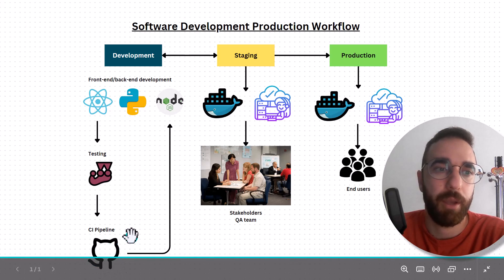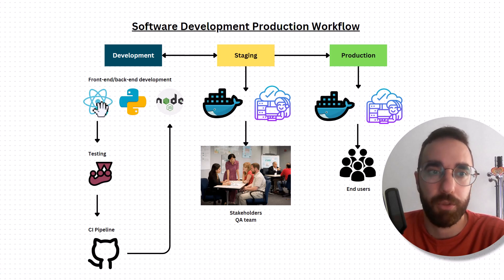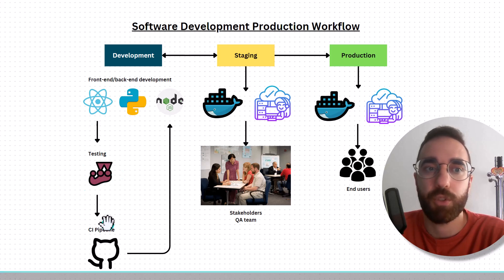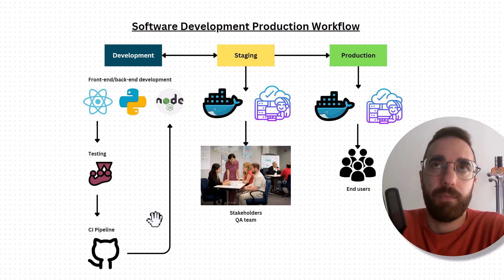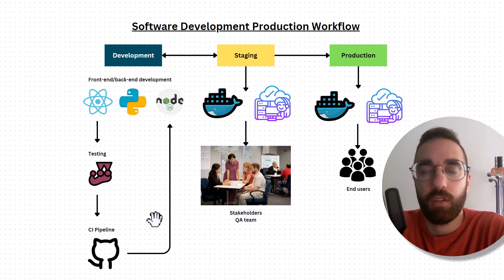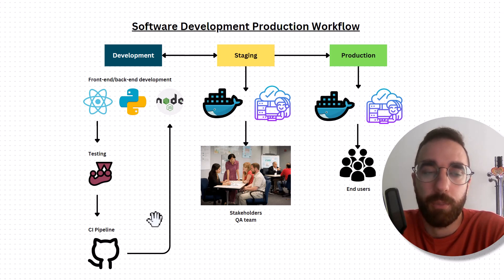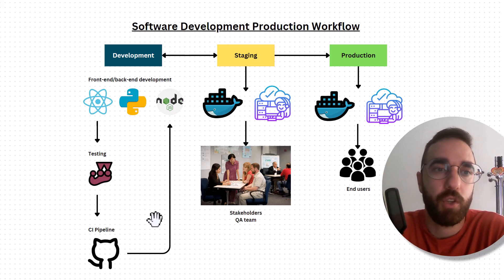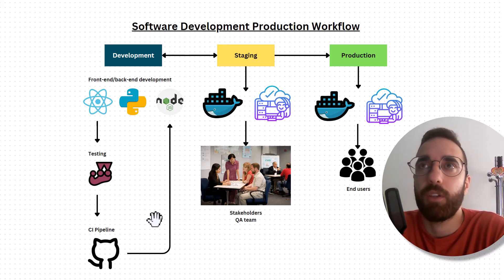With GitHub Actions, whatever code you push from your local environment, you push it after running your tests to the CI pipeline. The CI pipeline is a pipeline of automated steps — CI stands for continuous integration. This pipeline is a series of steps that run automatically, and you can run any kind of automated logic. That logic will be executed based on a specific event or action.